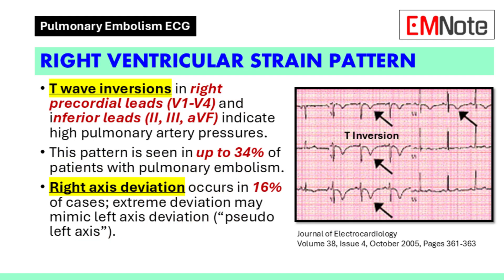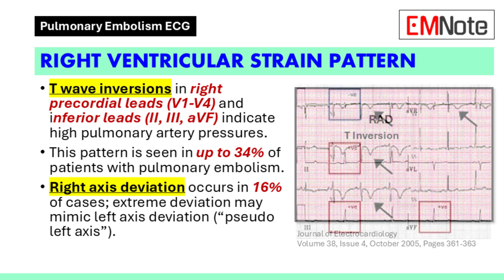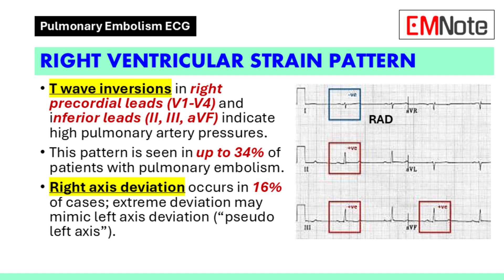A right ventricular strain pattern is characterized by T-wave inversions in the right precordial leads, specifically V1 through V4, and in the inferior leads 2, 3, and AVF. This pattern is seen in up to 34% of patients and indicates elevated pulmonary artery pressures. Right axis deviation, a shift in the heart's electrical axis, occurs in 16% of patients.